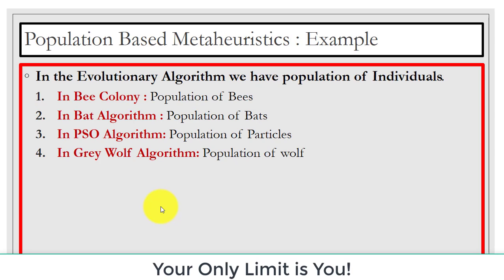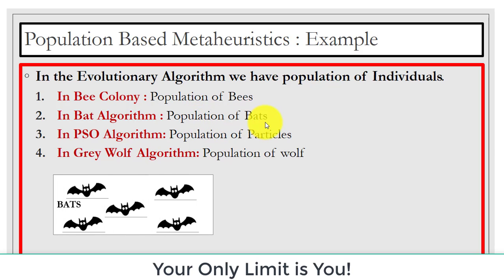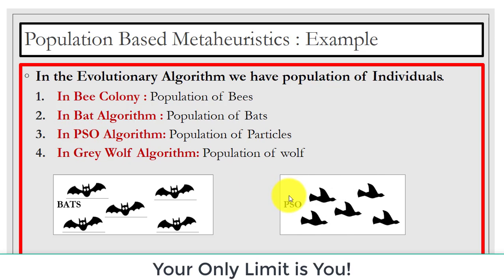In evolutionary algorithms we have a population of individuals. For example, in the bee colony we have a population of bees, in the bat algorithm we have a population of micro bats, in PSO (particle swarm optimization) we replaced birds with particles so we have a population of particles, and in grey wolf optimization we have a population of wolves.